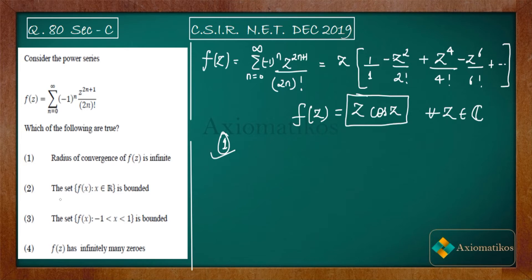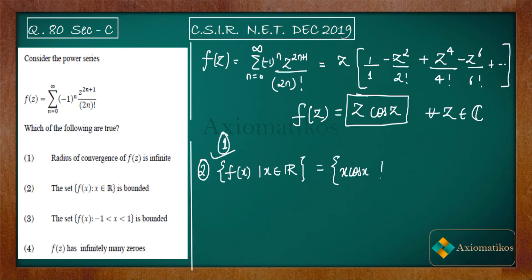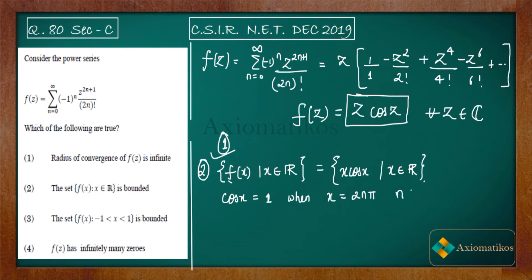Option 2 says: if we replace z with x, then the set {f(x) : x ∈ ℝ} is bounded. So f(x) = x·cos(x) for x ∈ ℝ, and we need to decide if this set is bounded or not. We know that cos(x) = 1 when x is a multiple of 2π, i.e., at x = 2nπ for all n ∈ ℤ.